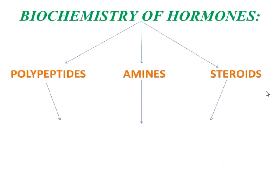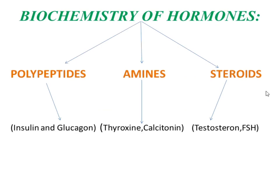If we look at the biochemistry of hormones, they are basically polypeptides, amines, and steroids. In polypeptides we can see insulin and glucagon. Thyroxin and calcitonin are amines, while steroids include testosterone, FSH, and oxytocin, among others.